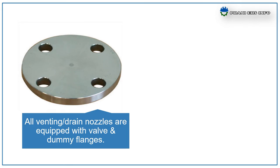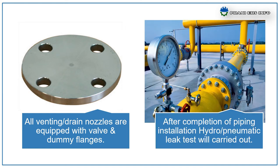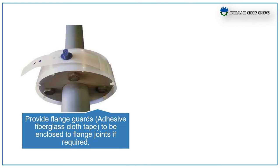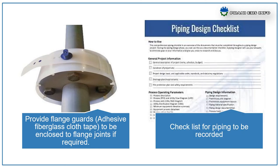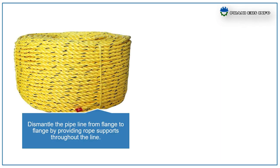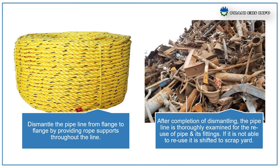All venting or drain nozzles shall be equipped with a valve and dummy flanges. After completion of piping installation, hydro or pneumatic leak testing will be carried out. Provide flange guards to enclose flange joints if required. A checklist for piping shall be recorded. Dismantle the pipeline from flange to flange by providing rope support throughout the pipeline. After completion of dismantling, the pipeline is thoroughly examined for reuse of pipe and its fittings. If not suitable for reuse, it is shifted to the scrapyard.